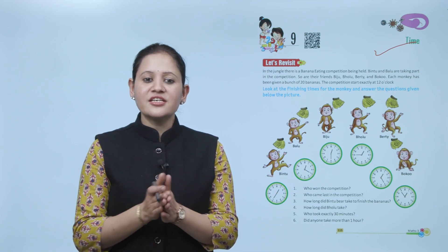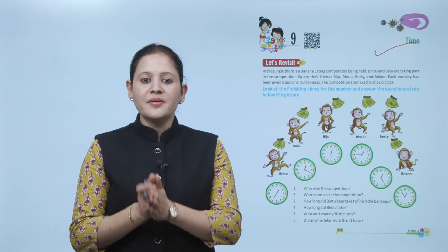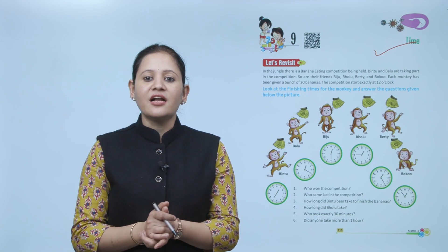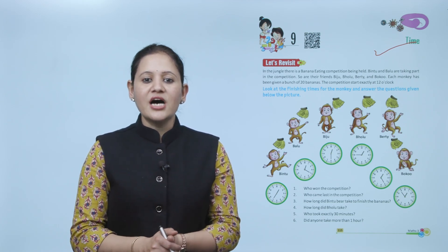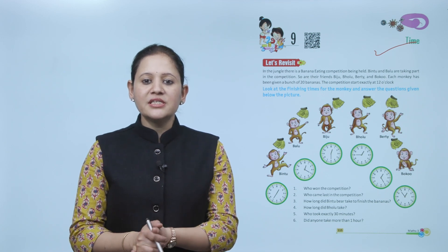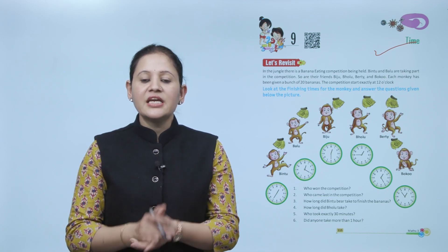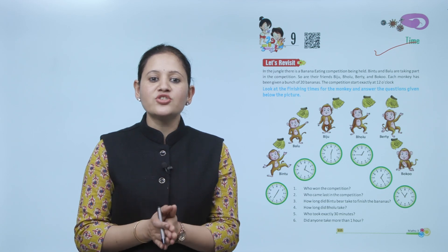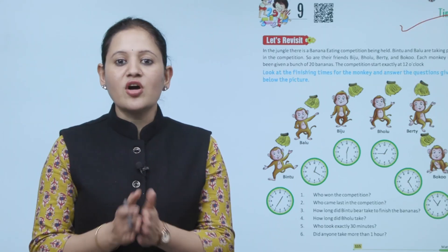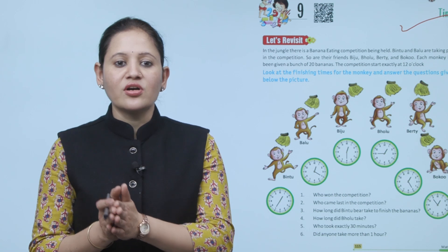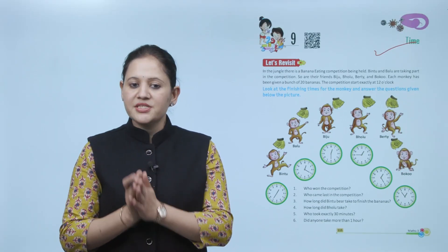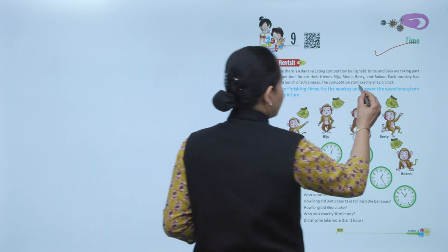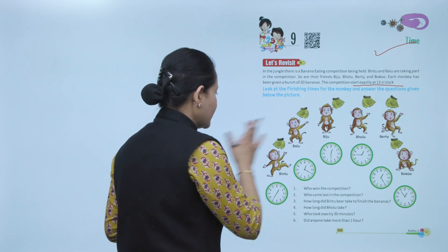Let's revisit. In the jungle there is a banana eating competition being held. Bintu and Baloo are taking part in the competition, so are their friends Biju, Bholoo, Bertie, and Boku. Each monkey has been given a bunch of 20 bananas. The competition starts exactly at 12 o'clock. Look at the finishing time for the monkeys and answer the question given below in the picture.